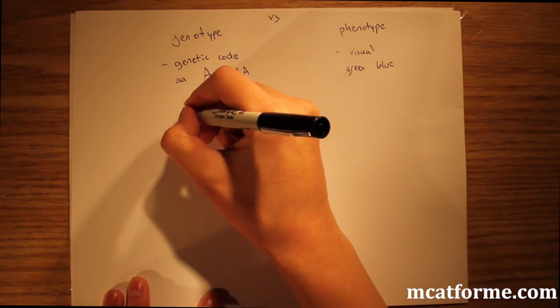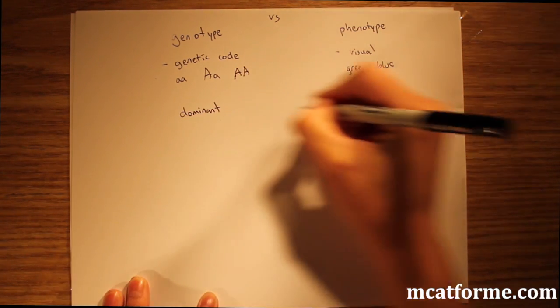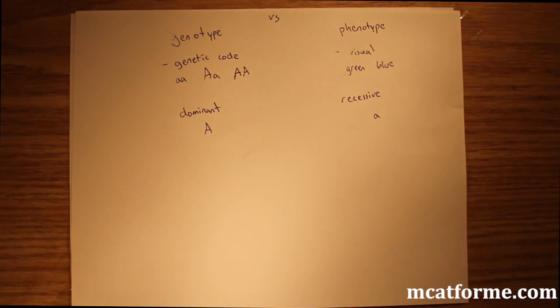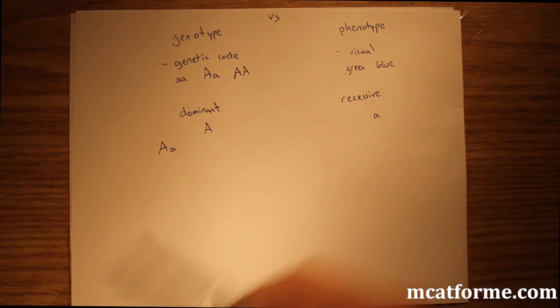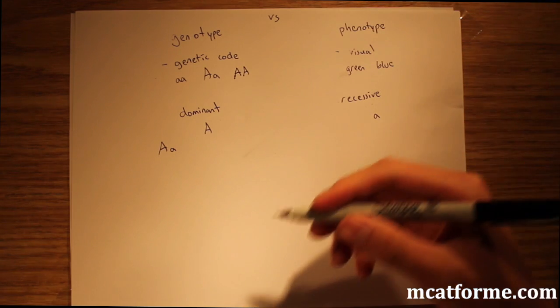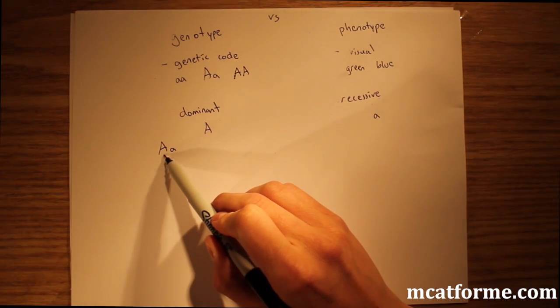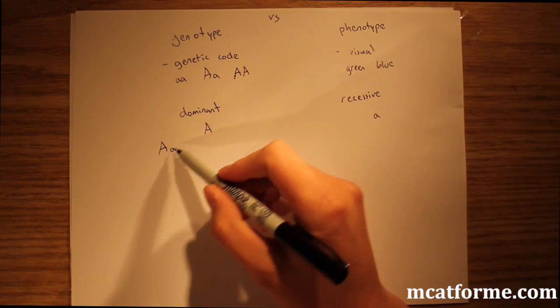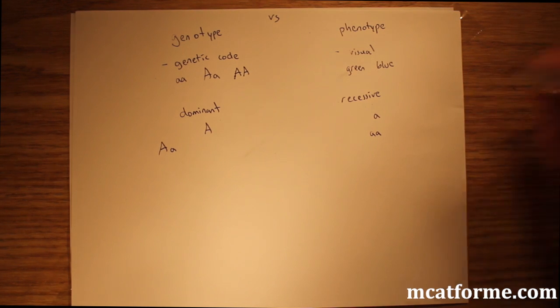The next one is dominant versus recessive. Generally we represent recessive with little a and dominant with big A. You define it strictly based on the heterozygote individual. Heterozygote means two different ones, so big A and little a. What dominance actually means is that in a heterozygote, you're going to actually express that phenotype, the dominant phenotype. Recessive individuals, that phenotype is going to be silenced. You'll only see it when you have a homozygote recessive. You strictly define dominant versus recessive based on heterozygotes.